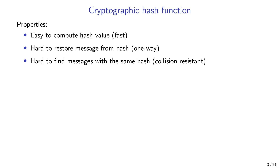Then it should be collision resistant, meaning that it should be very hard to find several messages that will produce the same hash value. This is the most basic property of a cryptographic hash function.